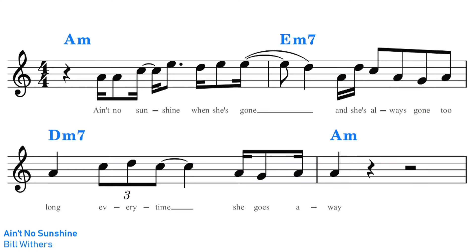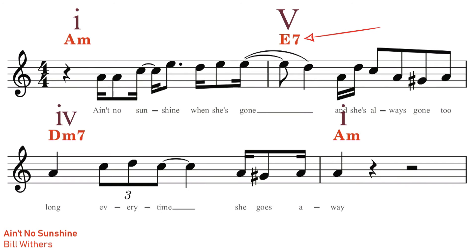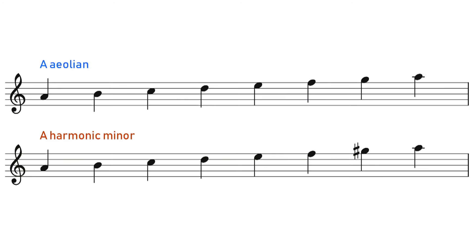The best thing to look out for is the fifth chord of the key. If the song is using the natural minor, Aeolian, then the fifth chord will be a minor chord. For example, Ain't No Sunshine by Bill Withers is in the key of A minor, and we can tell it's using the natural minor because the fifth chord, E, is an E minor. If it was instead using the harmonic minor, this chord would be an E major. The one difference between natural and harmonic minor is the 7th degree, and it's that 7th degree that dictates whether the fifth chord is major or minor, because the 7th degree is the third of that chord.